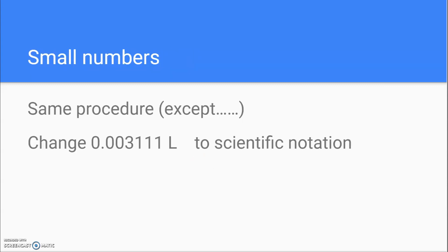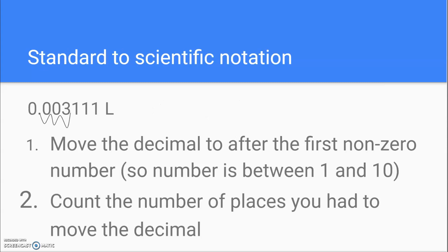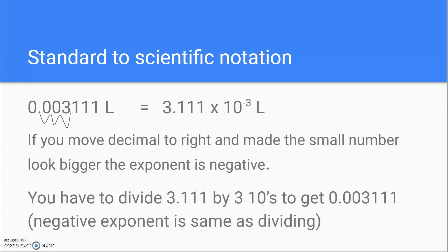But what about the very small numbers? We're going to do the same procedure. We're going to change 0.003111 liters to scientific notation. We move the decimal to after the first non-zero number so the number is between 1 and 10 — so the decimal goes here between the 3 and the 1. Then we count the number of places we had to move it: 1, 2, 3 places. So the number becomes 3.111 times 10 to the — we moved it 3 places — but it's not 10 to the 3rd this time, it's 10 to the negative 3rd.